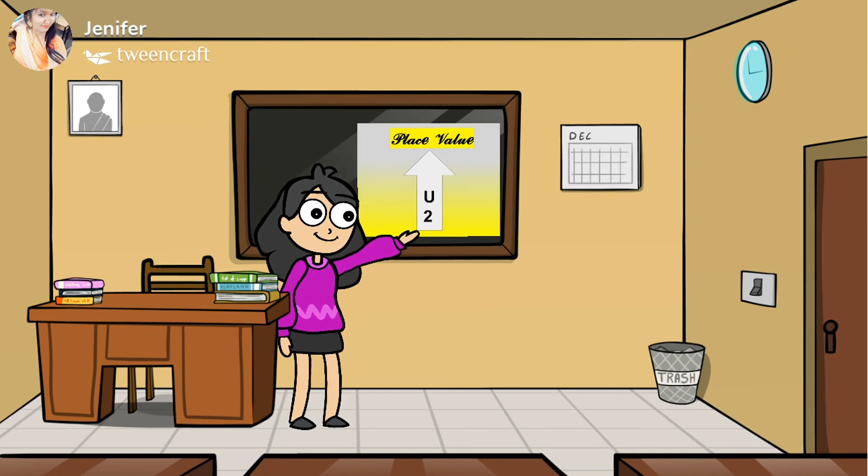So see students, 2 is written below the unit. The short form of unit is U. So what is the place value of 2? That is unit.